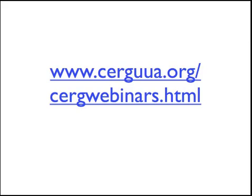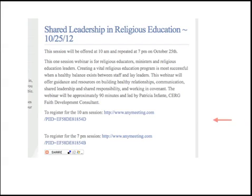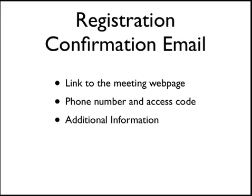Now go to the Surge webinar page at www.surgeuua.org/surgewebinars.html, or the site where you saw the webinar advertised, and select the webinar you want to attend. Click the webinar registration link. The registration page will ask you for your basic contact information. After you register and before the webinar starts, you will get an email with a link to the meeting webpage, a phone number to call, and the attendee access code.